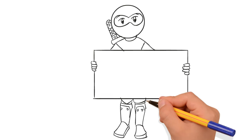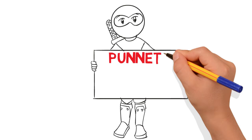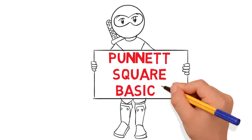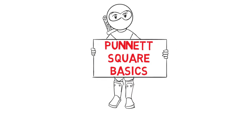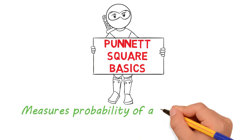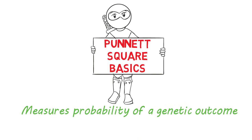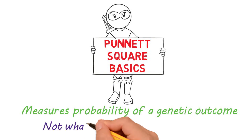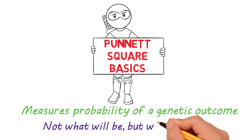Thanks for stopping by. Today we're talking about the basics of Punnett squares. Punnett squares measure the probability or likelihood of a genetic outcome based on a specific genetic cross. It doesn't tell you what will be, only what could be.